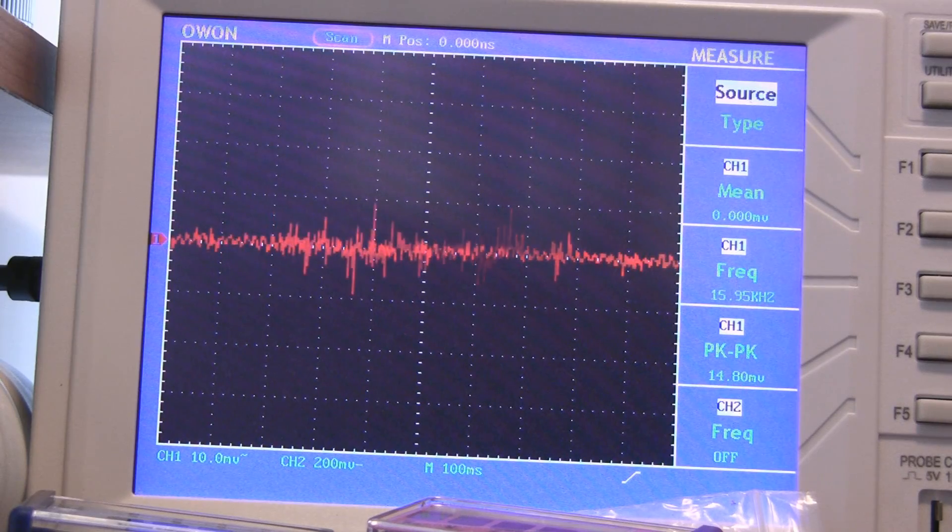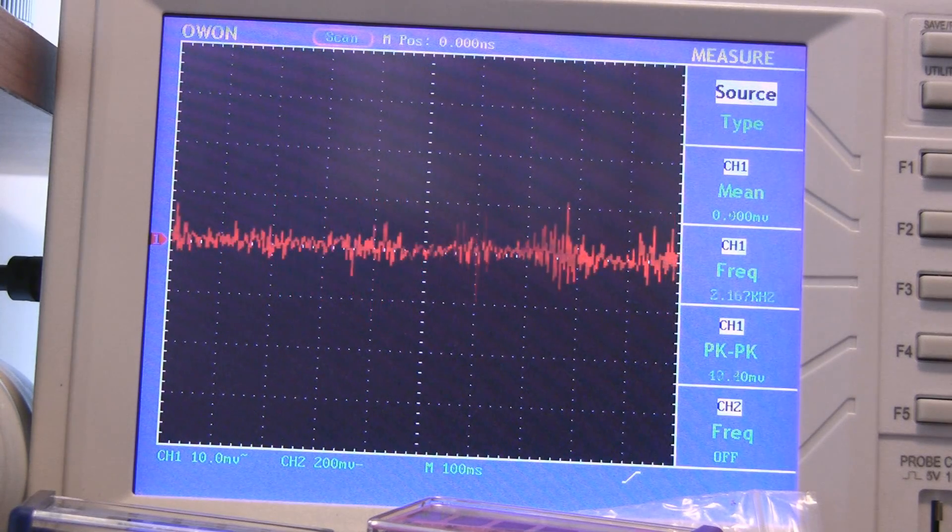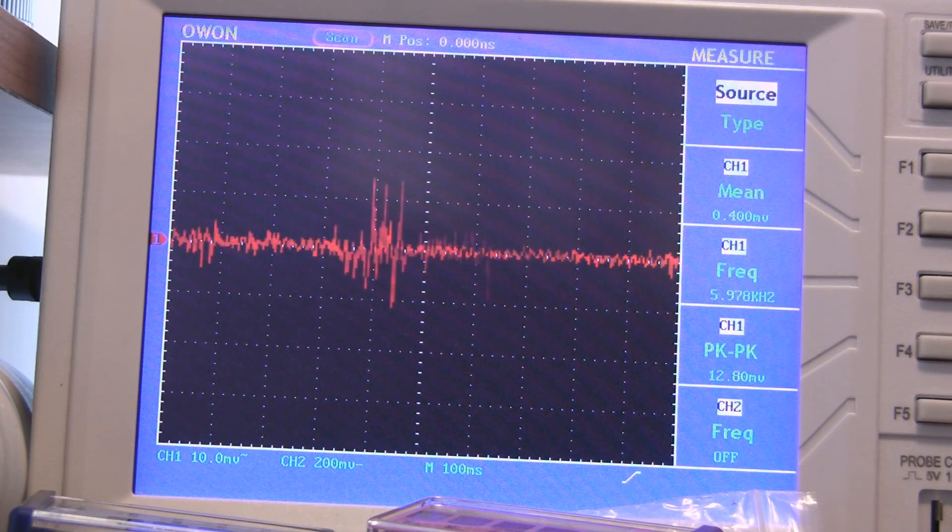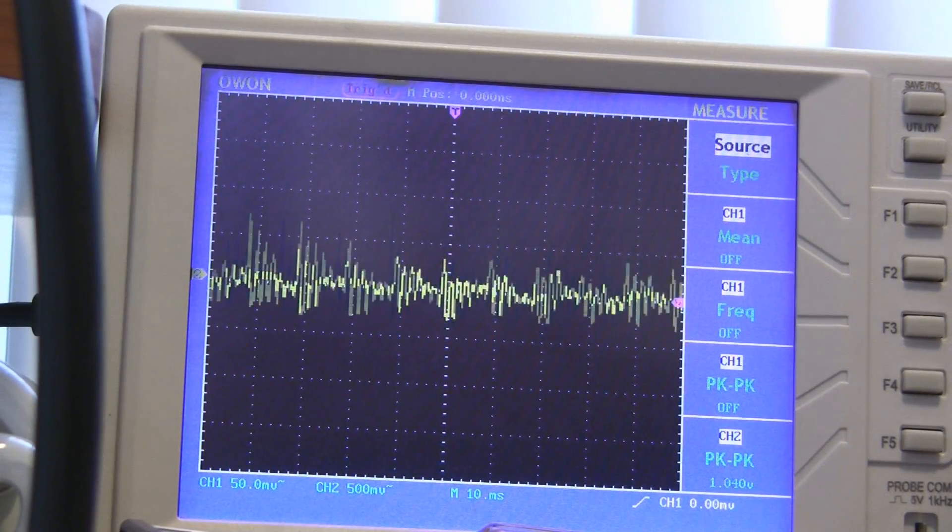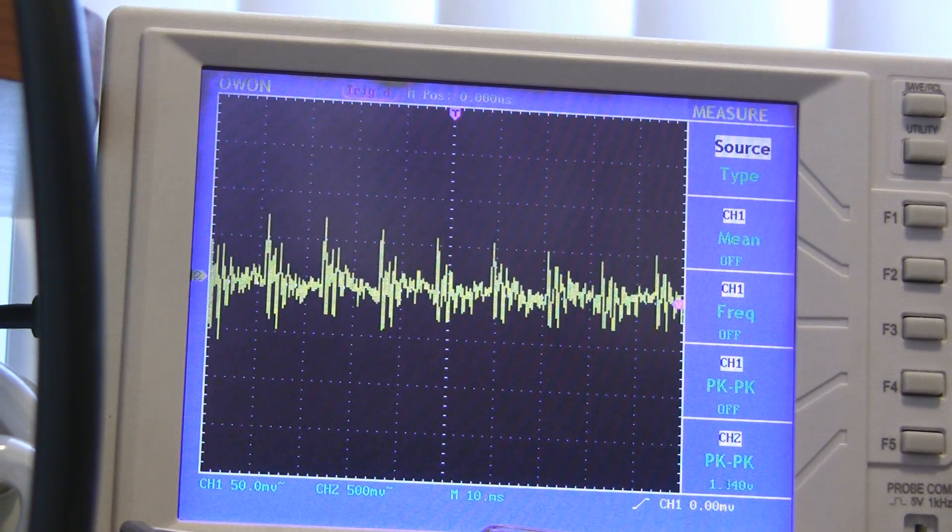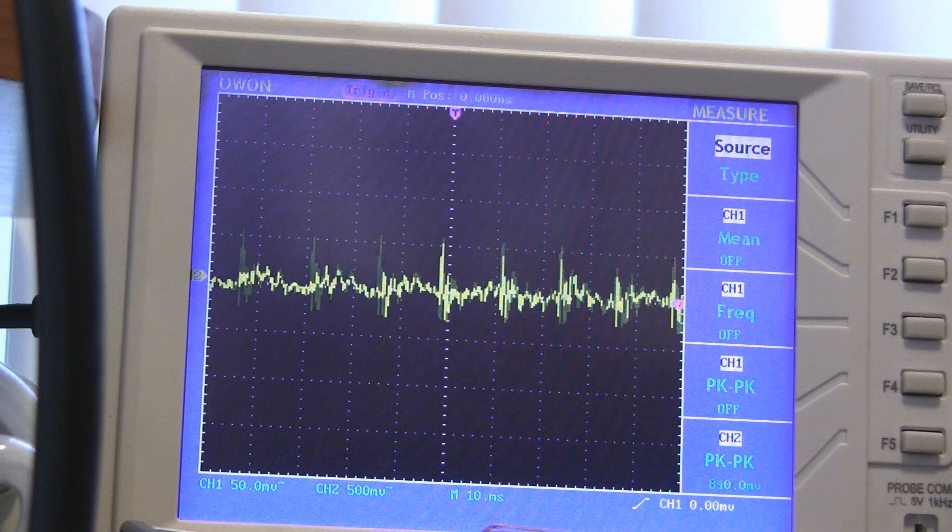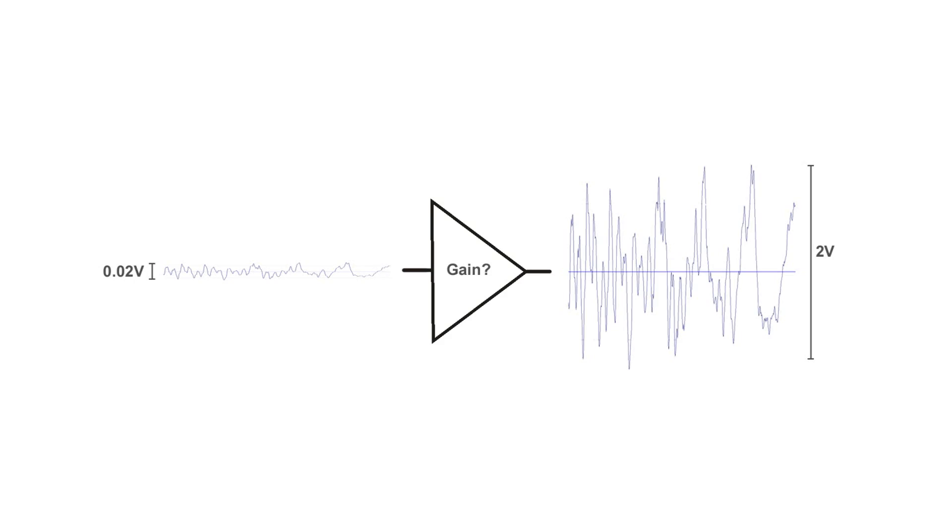By doing a few measurements with my oscilloscope, I found out that a microphone puts out a tiny voltage of about 20 millivolts peak to peak. By doing some more measurements, I found out that I need to give my earbuds about 2 volts peak to peak to be able to hear things loudly. So I need to take an input waveform that is 20 millivolts and increase it to 2 volts, meaning I want to design an amplifier with a gain of 100.